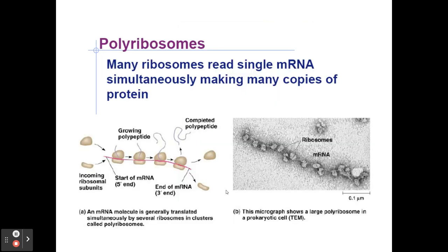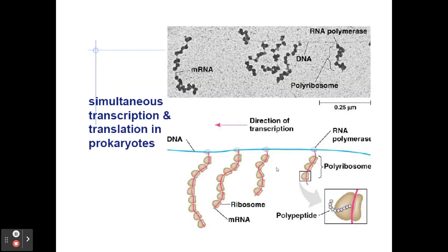What happens to the messenger RNA after a protein is made? Other ribosomes can attach to it. As long as that messenger RNA remains inside the cell, ribosomes will attach and continue making more and more protein. If that messenger RNA is not neutralized, the cell will continually make a lot of that particular protein. There can be multiple ribosomes on a single messenger RNA molecule — this is called a polyribosome.